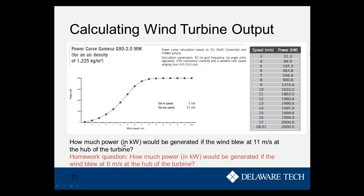Looking at the power curve table, if the wind blows at 11 meters per second at hub height, the turbine would generate 1,863 kilowatts. For homework, answer the question: how much power in kilowatts would be generated if the wind blew at 6 meters per second at the hub of the turbine?